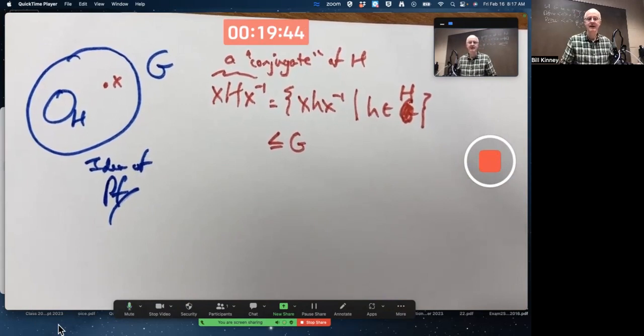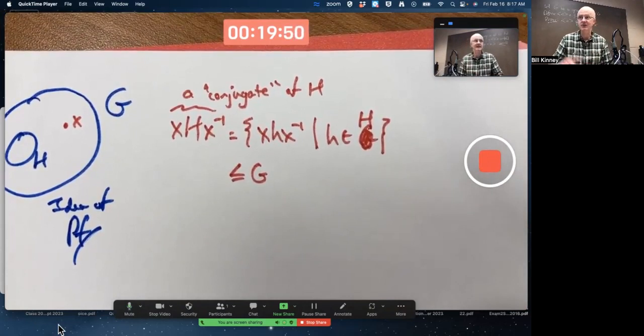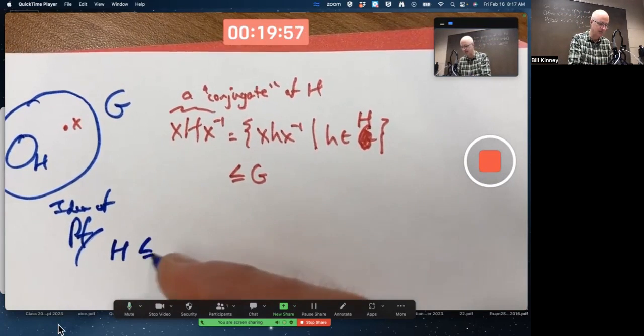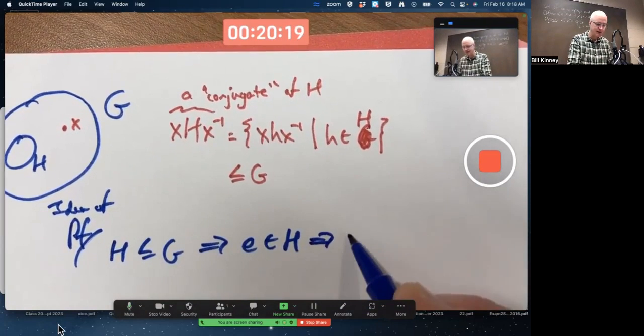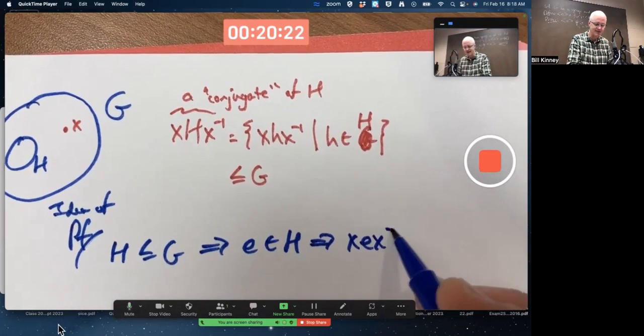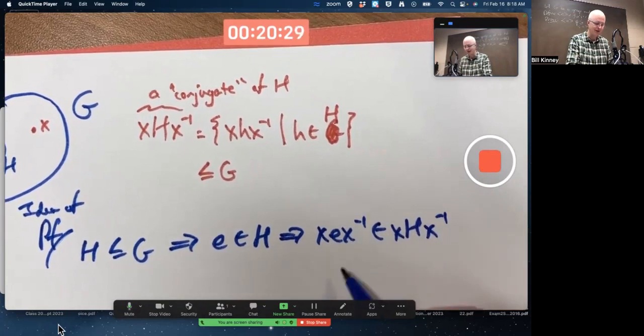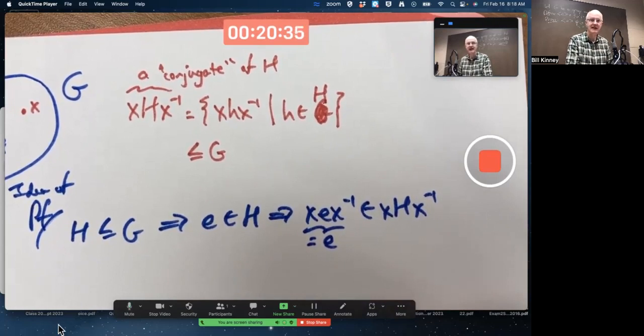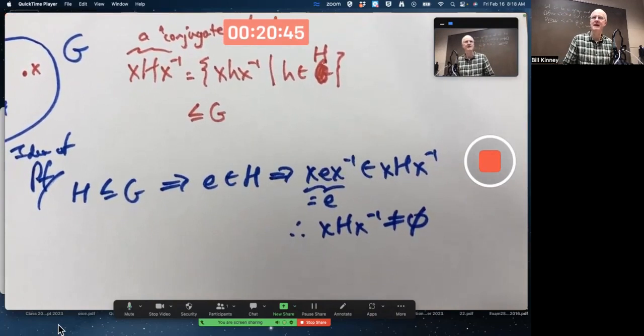First of all, is it non-empty? X is fixed and H is a subgroup. H being a subgroup means it has at least one element, right? At least the identity. H being a subgroup of G implies the identity of G is in H, which means xex^(-1) is in this set. By the way, that equals e. The identity is in the set, so the set's non-empty. So that's the zeroth step, show the set's non-empty.